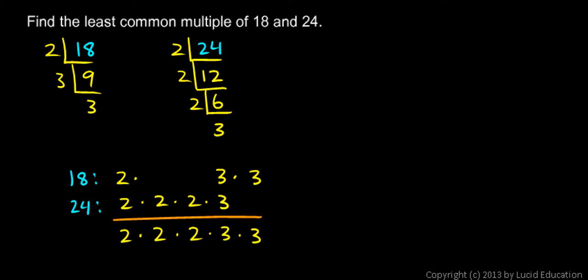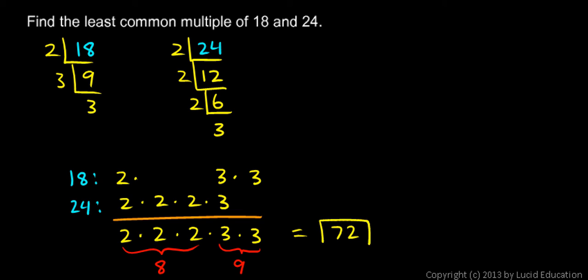So let's work this out. 2 times 2 times 2 is 8, and 3 times 3 is 9. So 8 times 9 is 72. Therefore 2 times 2 times 2 times 3 times 3 is 72, and that's the least common multiple of 18 and 24.